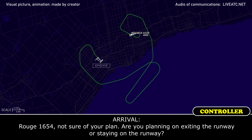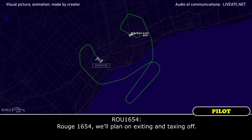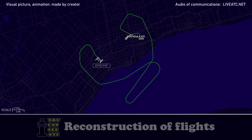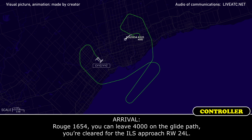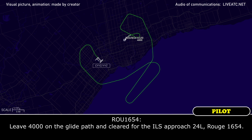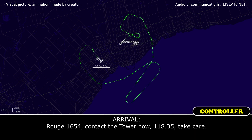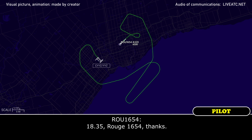Rouge 1654, are you planning on exiting the runway or staying on the runway? Rouge 1654, we'll plan on exiting and taxiing off. Okay, thank you. Rouge 1654, you can leave 4000 on the glide path, you're cleared for the ILS runway 24 left. Rouge 1654, contact the tower now, 118.35, take care. 118.35, Rouge 1654, thanks.